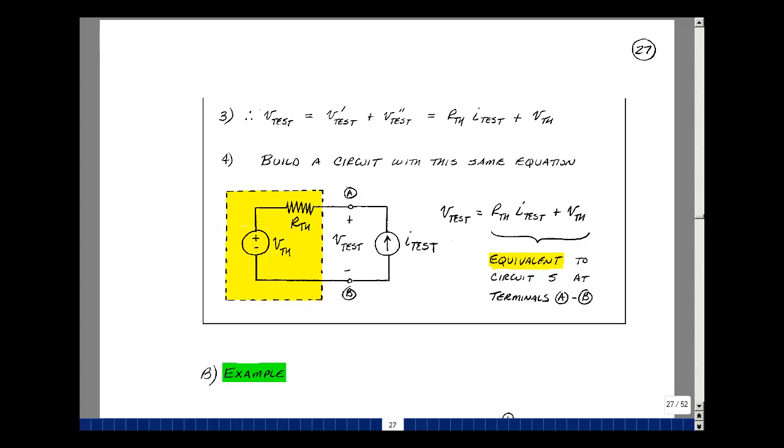Let's put the results together. The voltage V_TEST across the terminals of our circuit, when we started our proof, we've shown is equal to V_TEST prime plus V_TEST double prime. V_TEST prime was R Thevenin times I_TEST, and V_TEST double prime was V Thevenin.